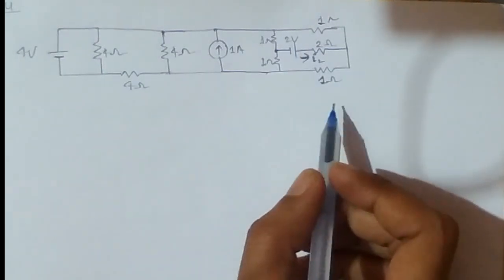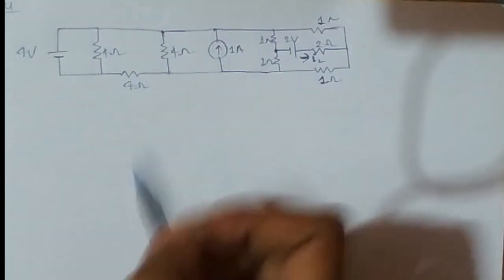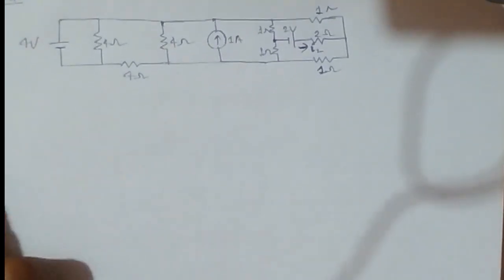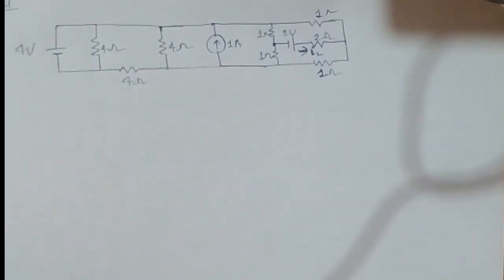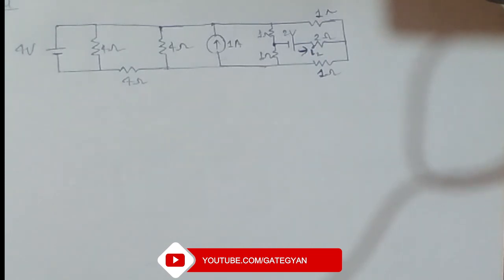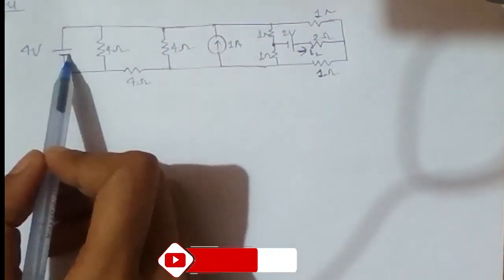To make this analysis simpler, here we can use the superposition theorem. By using superposition theorem, we will solve this circuit. In the superposition theorem, we will consider one source at a time.